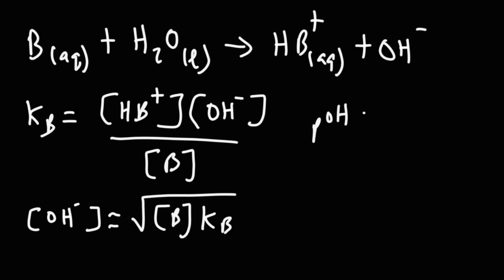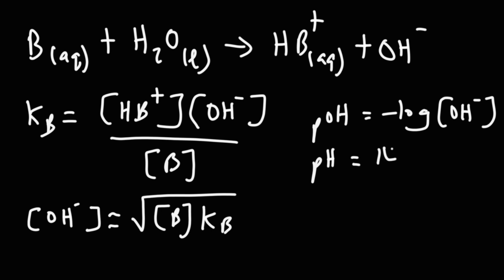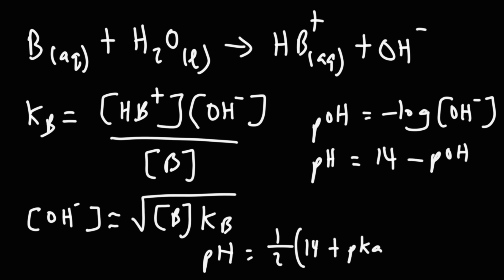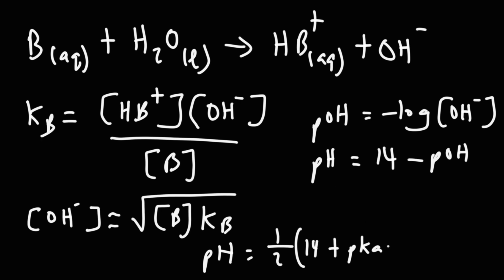Once you have the hydroxide concentration, you can calculate the pOH using this formula, and once you know the pOH you can find the pH. That's three steps. If you want to go directly to the pH in one step, use this formula: pH equals one half times (14 plus pKa plus log of the concentration of the base), where pKa is the pKa of the conjugate acid. The Kb value is associated with the weak base, and you'll need to calculate Ka from Kb to get the pKa.